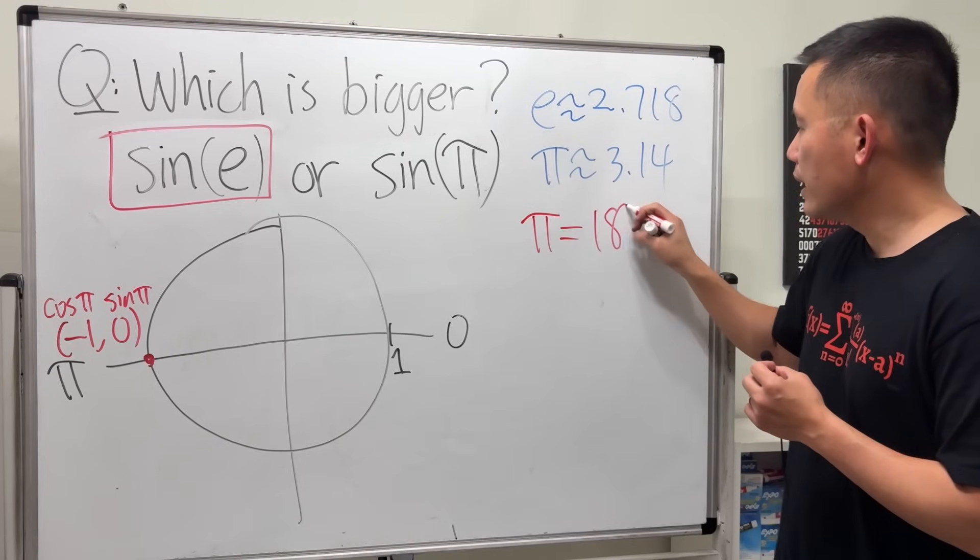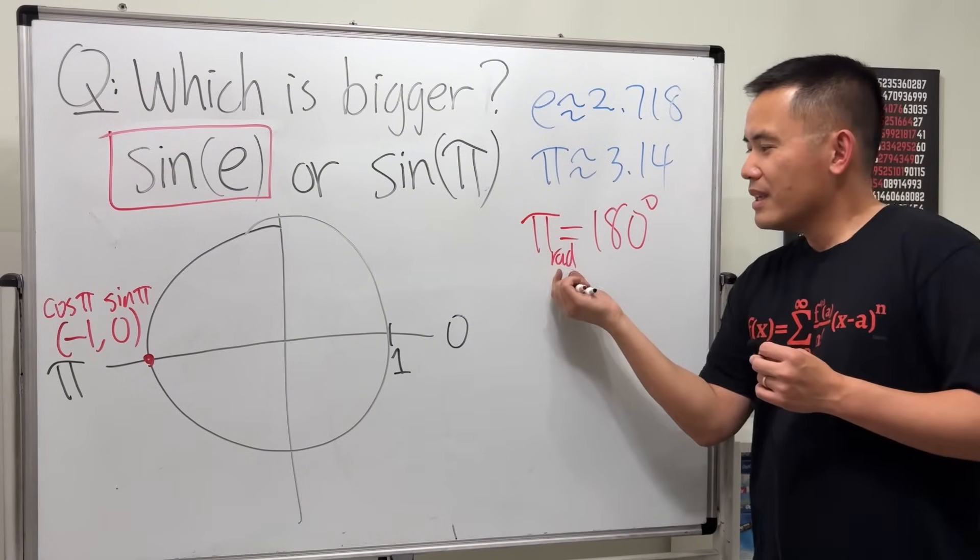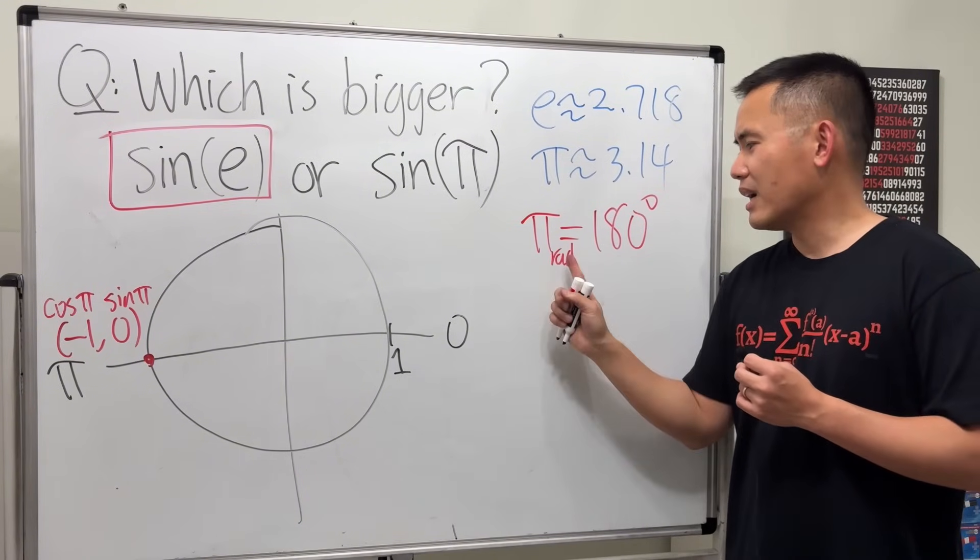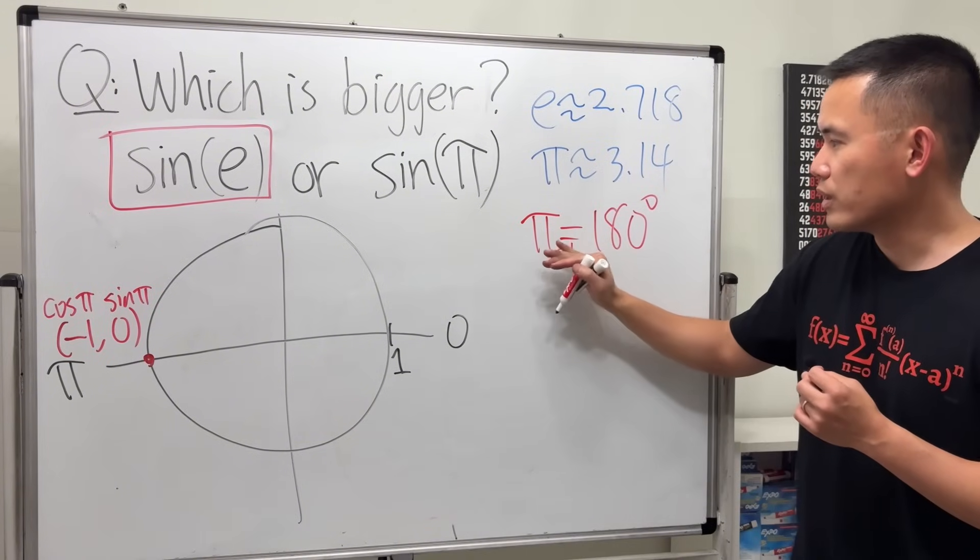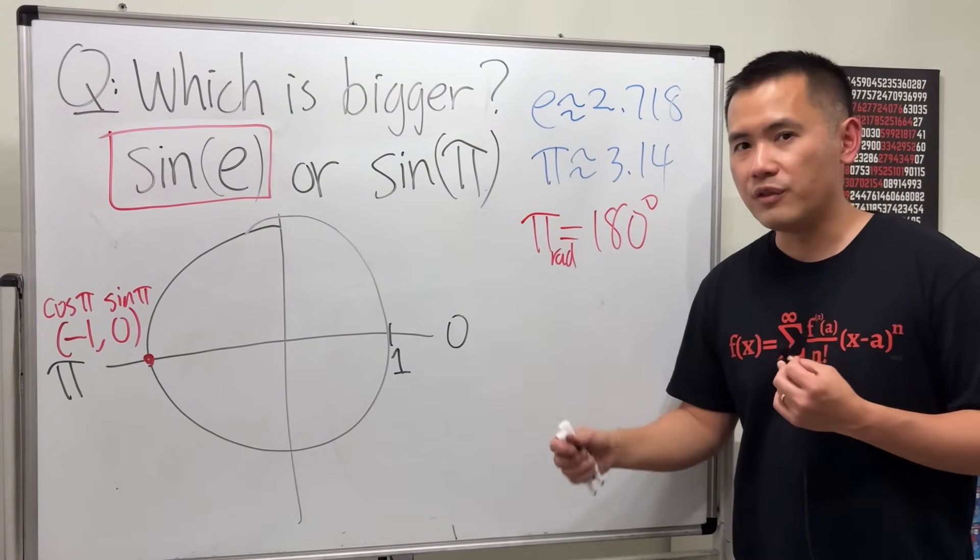Now let me just write this down real quick: π is equal to 180 degrees. And to make this study more clear, you can say this is π radian, but you don't need to write that down. For the radian you don't have to write down 'rad' every single time.